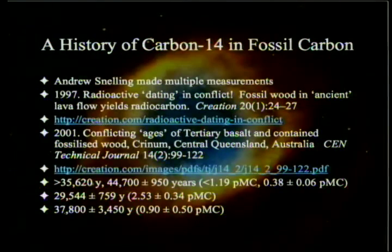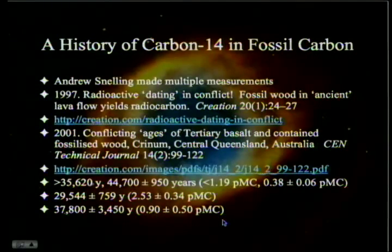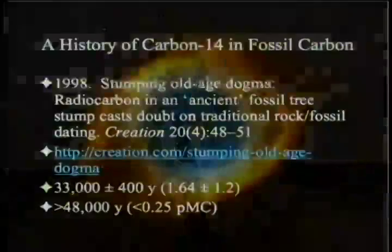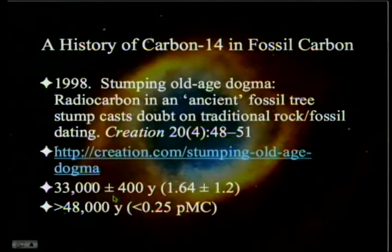Another part gave 29,500 — essentially 30,000 years — and here's one at 38,000 years, or 2.53% modern carbon, and this one is 0.90% modern carbon. Remember, the predicted value for these things is zero by the standard model. Andrew Snelling continued to date more specimens in 1998: one was 33,000 and another was greater than 48,000. This matches the standard model; this one, of course, does not.